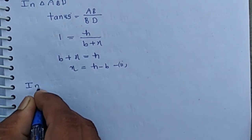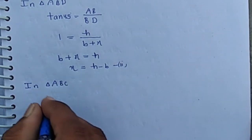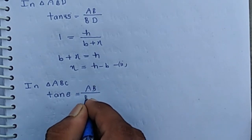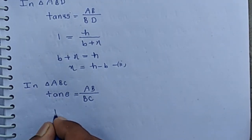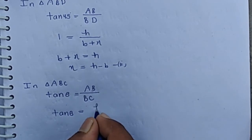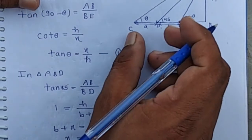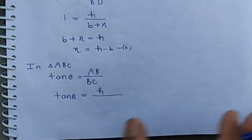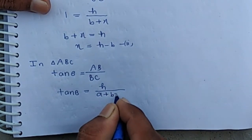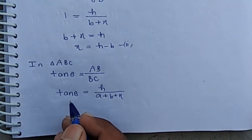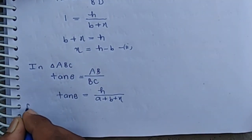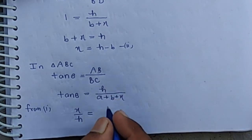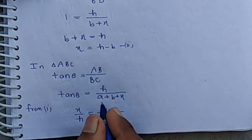In triangle ABC, tan theta equals perpendicular upon base, which is AB by BC. tan theta equals h by BC, and BC is the sum of CD, DE, and EB, so BC equals a plus b plus x. From equation one, tan theta equals x by h, and we also have tan theta equal h by a plus b plus x.